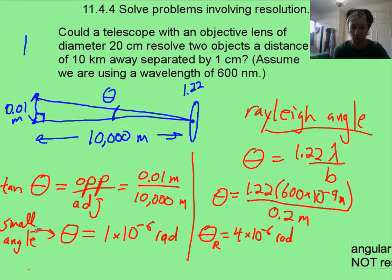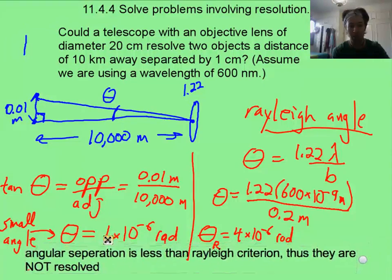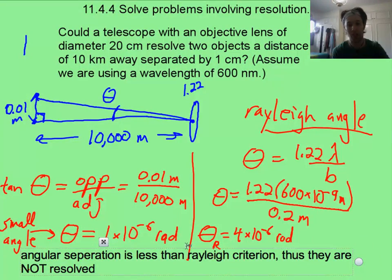You look back at the actual angular separation, and it's less. So we can say that since that angular separation is less than the Rayleigh criterion, it's too close. They're going to be a blur, and they are not resolved.